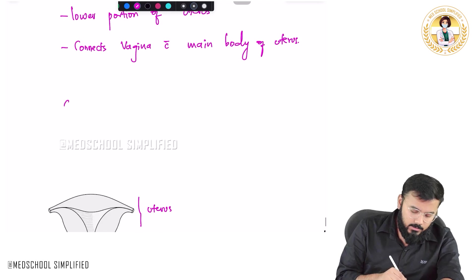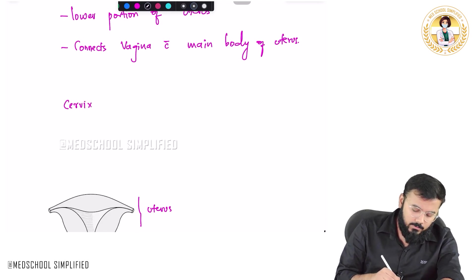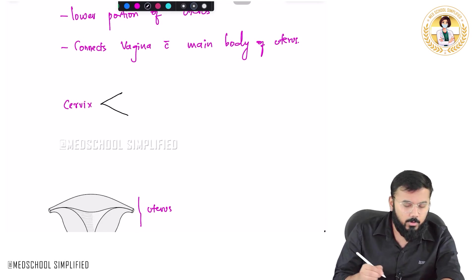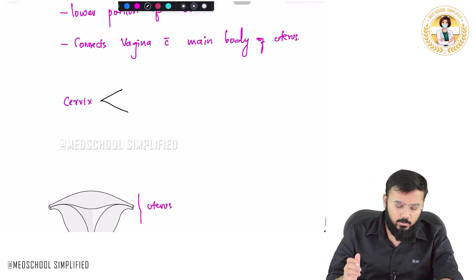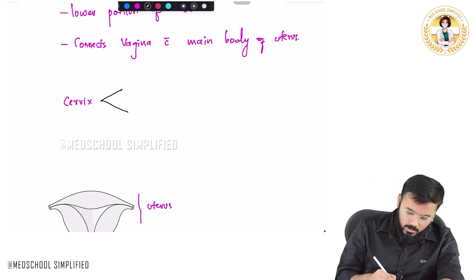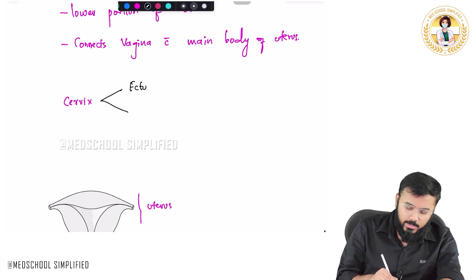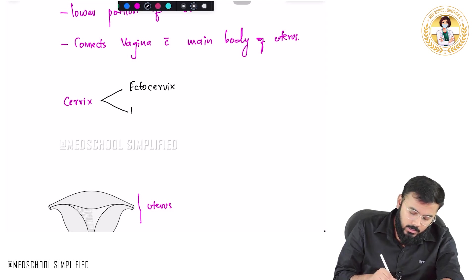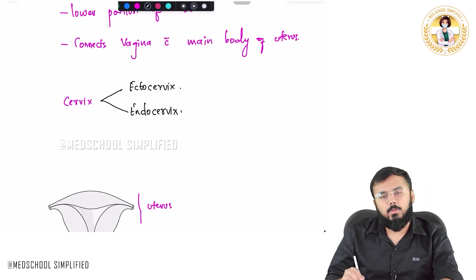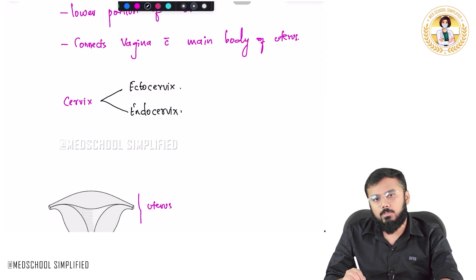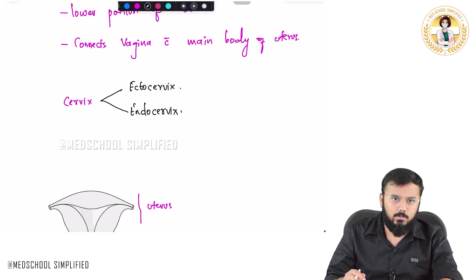Now when you look at the cervix, there are two important types: one is called the ectocervix, and another one is called the endocervix.